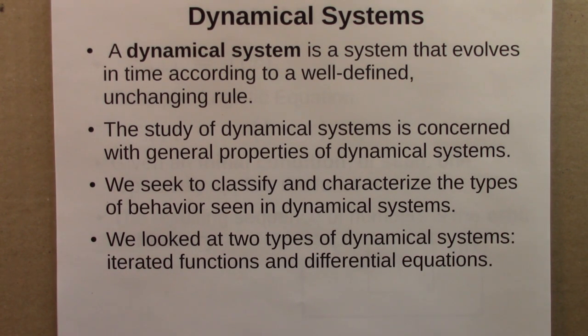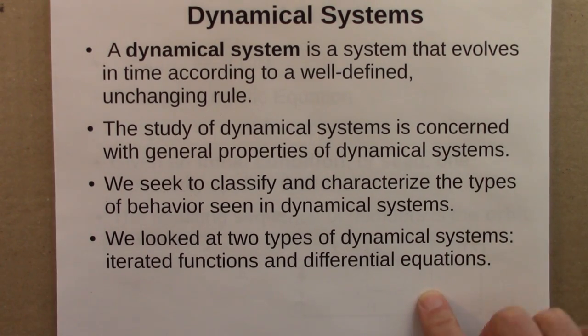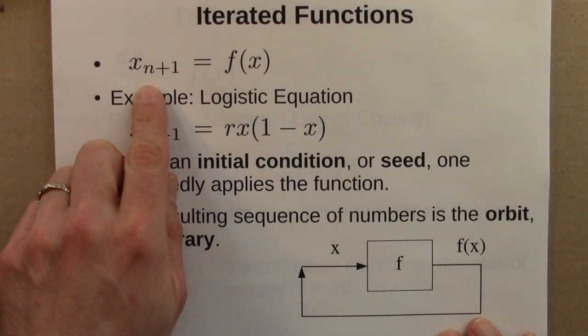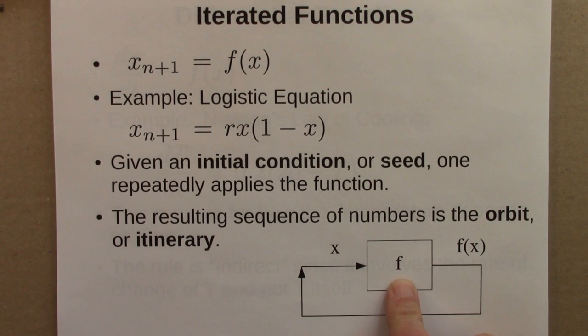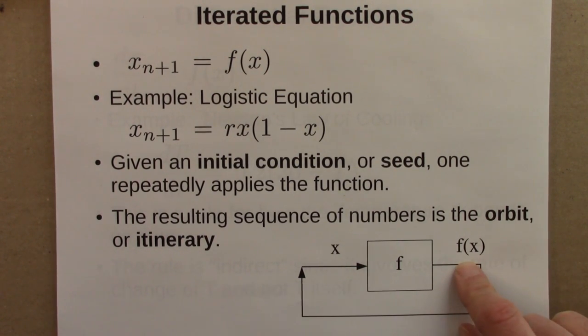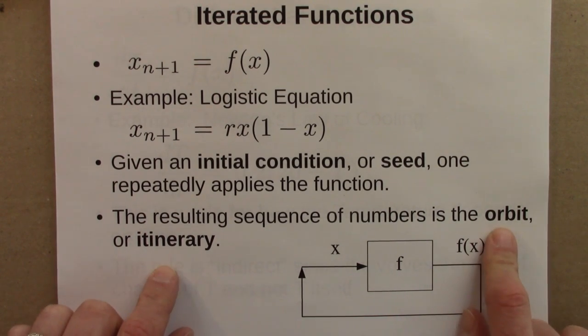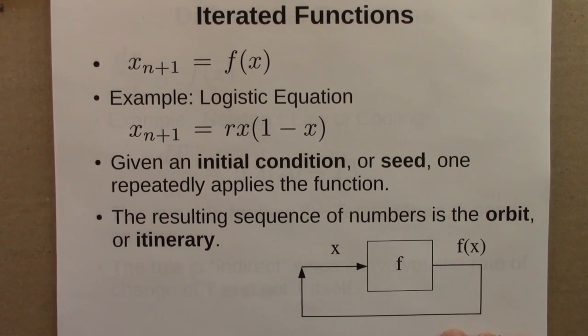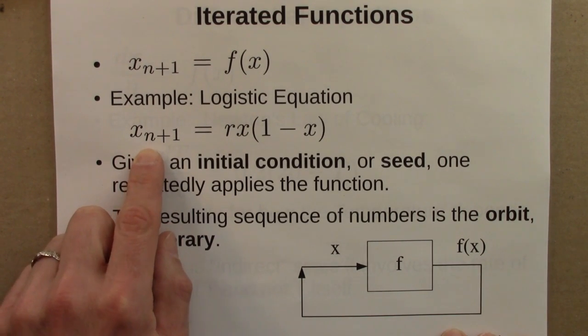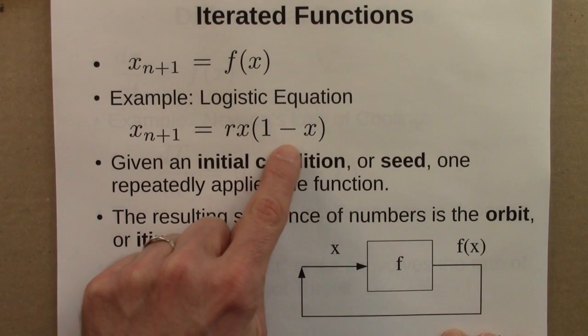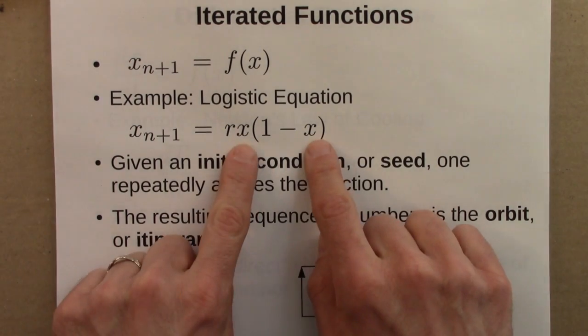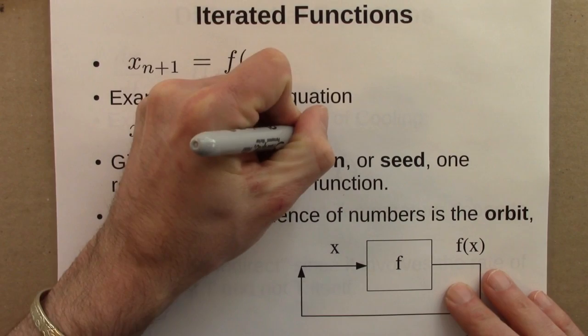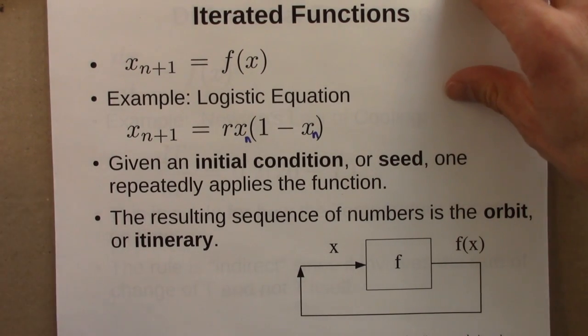We looked at two types of dynamical systems: iterated functions and differential equations. We started with iterated functions. That's where we start with an x value and apply a function to it. Then we iterate that process, repeat it again and again. We get a sequence of numbers and we call that the orbit or the itinerary. The main example we studied was the logistic equation, where the population of rabbits on some mythical island in the next year is this particular function of rabbits in the current year.